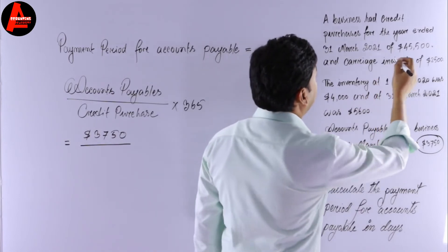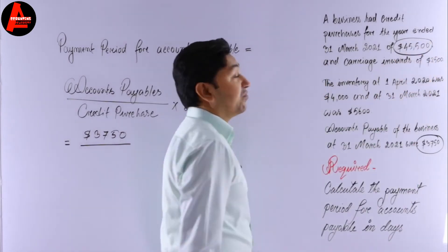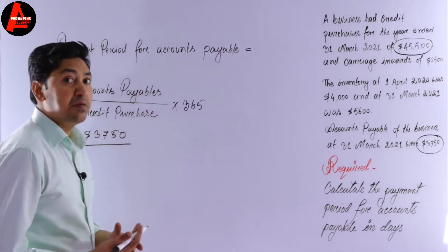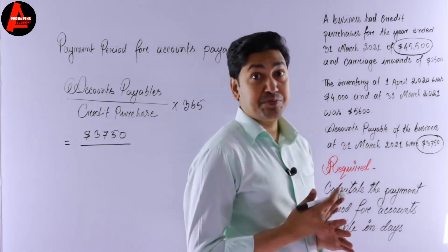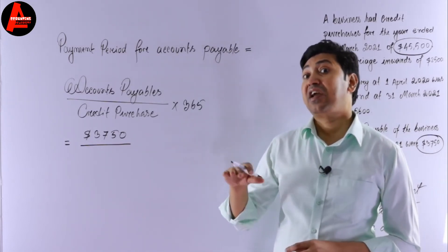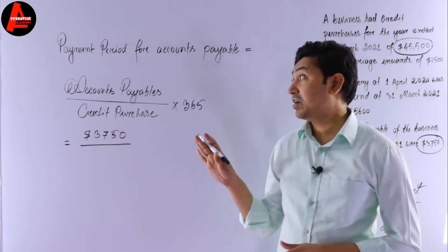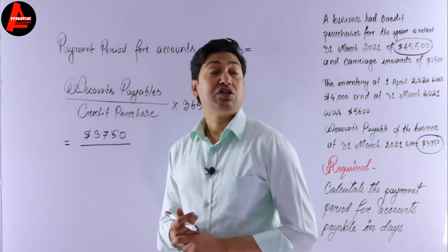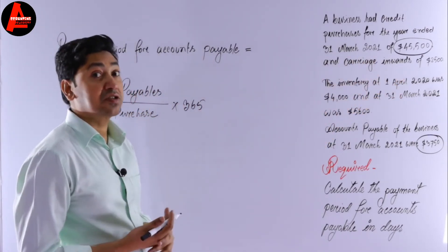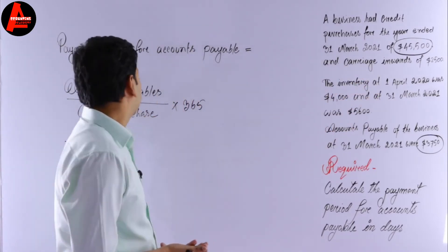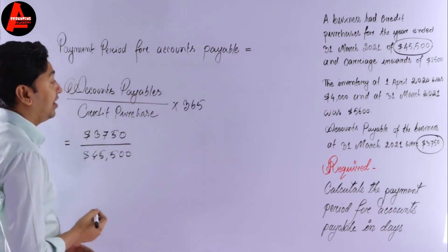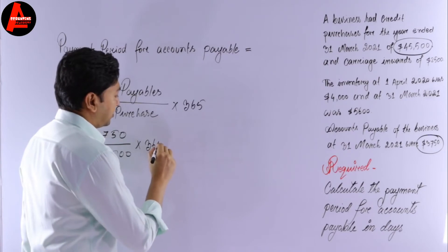Now for credit purchases — looking at the question, we have credit purchases of $45,500. Note that sometimes the question gives cash purchases, but you do not use cash purchases because they are recorded in the cash book and are not relevant to this ratio. Also, carriage inwards is not included in credit purchases. So credit purchases = $45,500, and we multiply by 365.